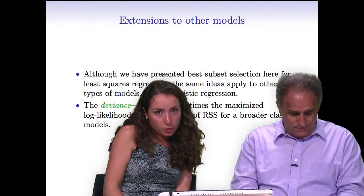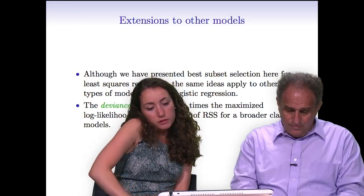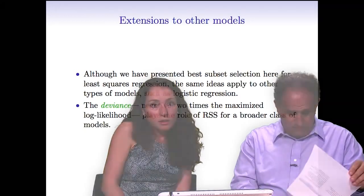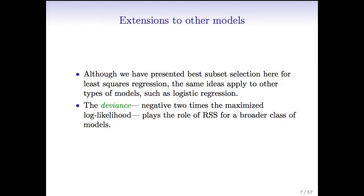As mentioned earlier, we're talking about best subset selection here for least squares, but we can just as well do this for logistic regression or any other type of model. When talking about other types of models, we don't usually talk about residual sum of squares. Instead we talk about something called the deviance, which is negative 2 times the log likelihood. In the case of least squares, the deviance and the residual sum of squares are equivalent, but for other model types, the deviance is really just a generalization of residual sum of squares. But here we're going to talk about residual sum of squares for simplicity.